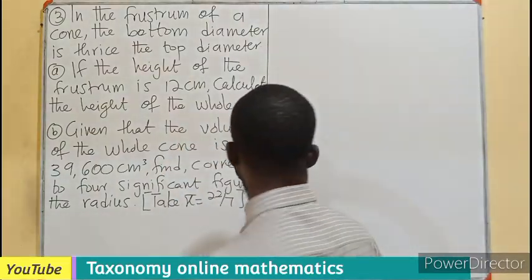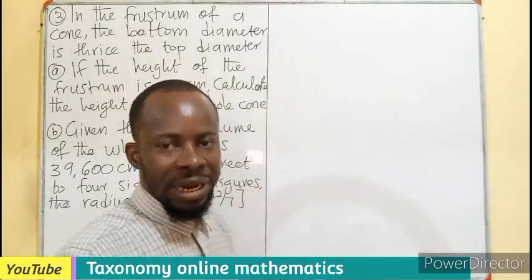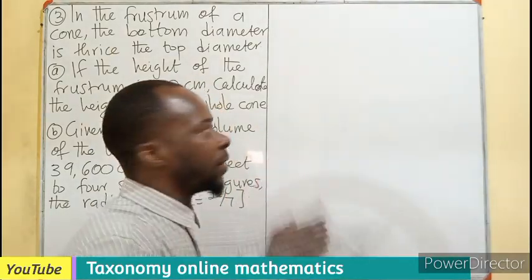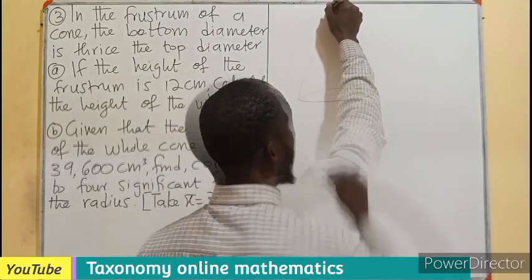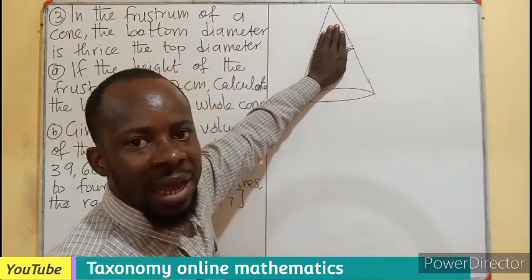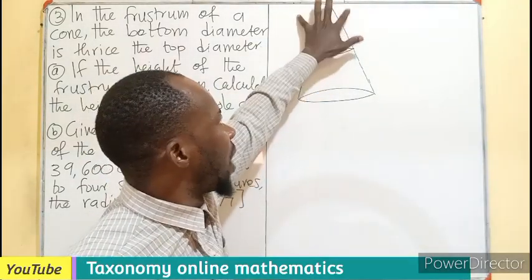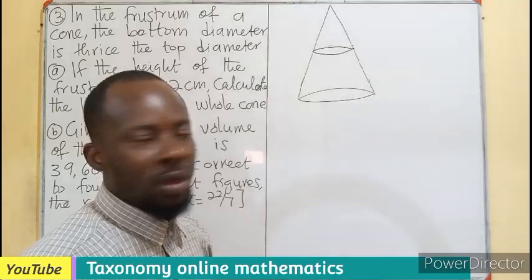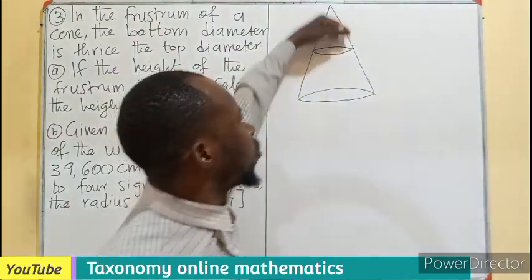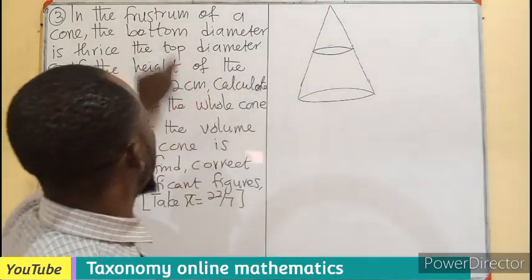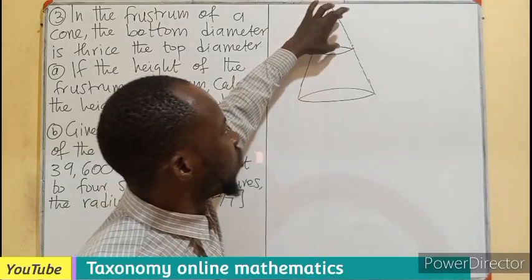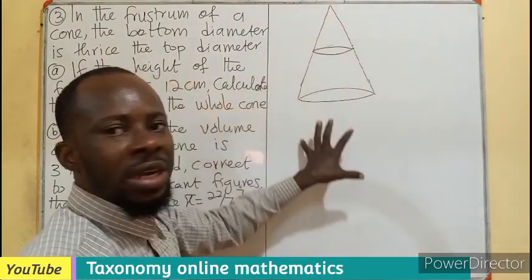Now we know a frustum is a cone that has been cut into two horizontally. You can see this is a complete cone. When you cut the cone into two to produce a smaller cone, the bottom is what you are calling the frustum. So the frustum plus the smaller cone give rise to the bigger cone.